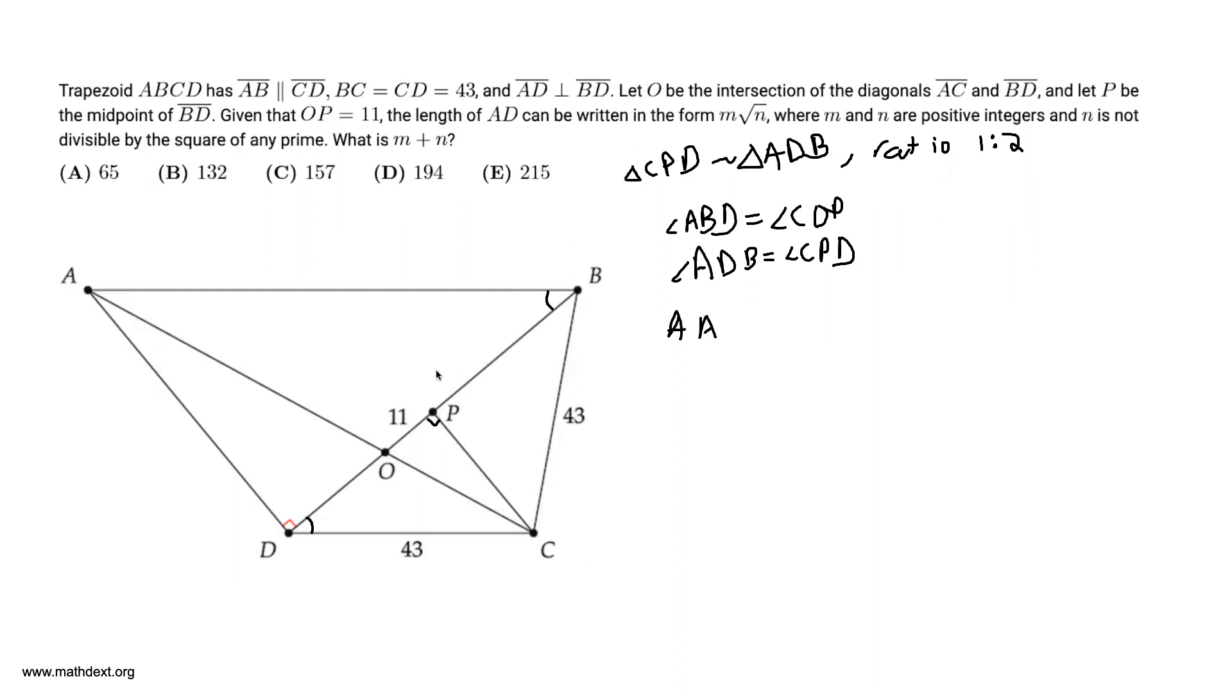Therefore angle-angle similarity gives CPD is similar to triangle ADB. However PD is half of DB because P is the midpoint of DB. So that proves that the similarity ratio between these two triangles is 1 to 2.